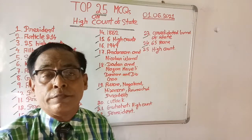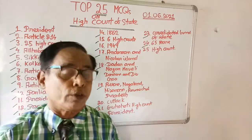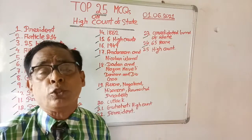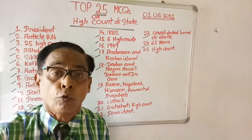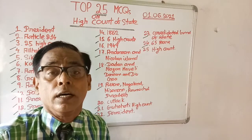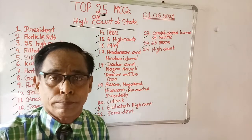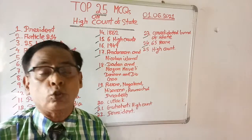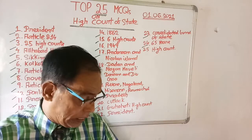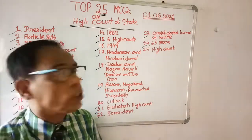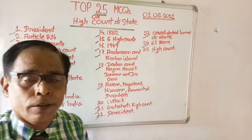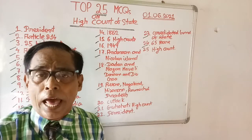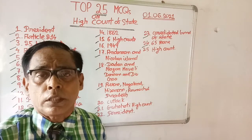Question number twenty-four: what is the retirement age of judges of the High Court? Options are: 62, 64, 63, and 65. The right answer is 65 — judges of the High Court retire at the age of 65.